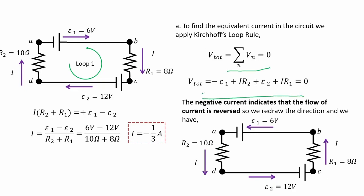We sum the potential in the loop and their corresponding sign using the sign convention. The negative current indicates that the flow of current is reversed as shown by the resulting value which is one third ampere. So to correct this we reverse the assumed direction as shown in the second figure.